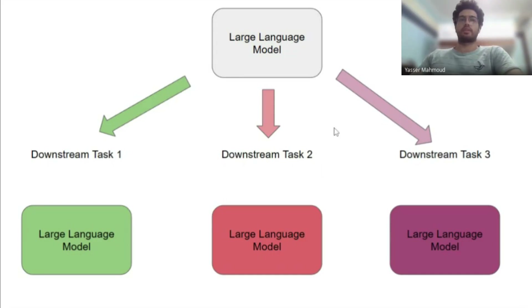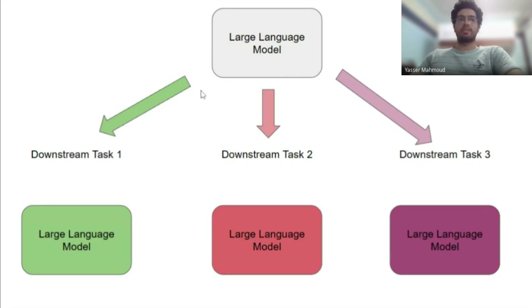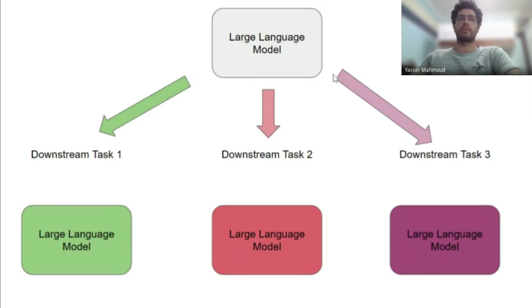This used to be okay a few years ago — the models weren't that big. For example, the biggest BERT is around 1.3 gigabytes, which was a manageable inconvenience. But at the moment, GPT-3 has 175 billion parameters — hundreds of gigabytes — and it's just not feasible to have that many copies of the same model for different downstream tasks.